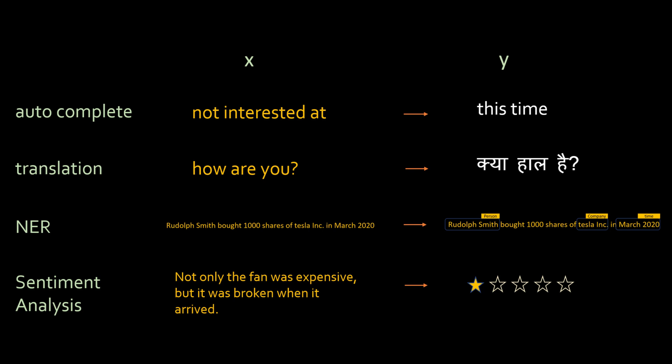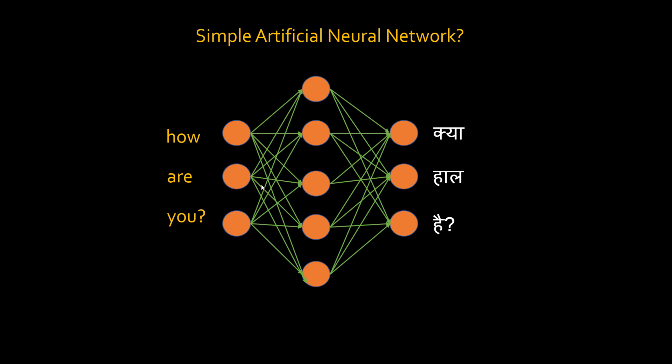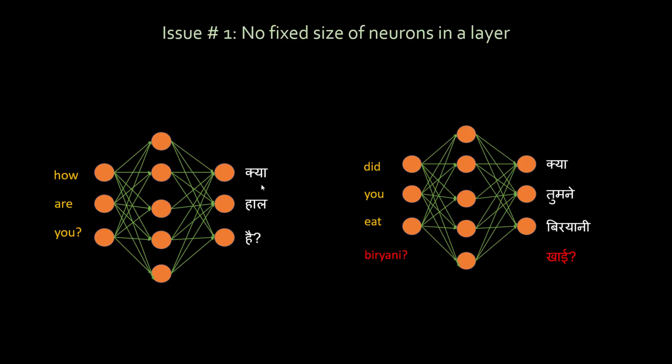Now you would think: why can't we use a simple neural network to solve this problem? All these problems are called sequence modeling problems because the sequence is very important when it comes to human language. For example, 'how are you' versus 'you are how' — the second doesn't make sense. So why don't we use a simple neural network? Let's try it. For language translation, we could build a network where input is the English statement and output is the translated statement.